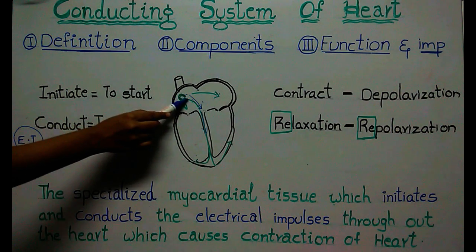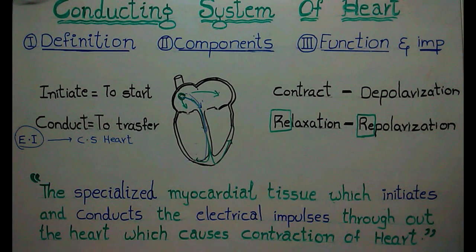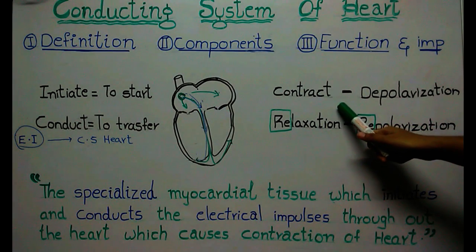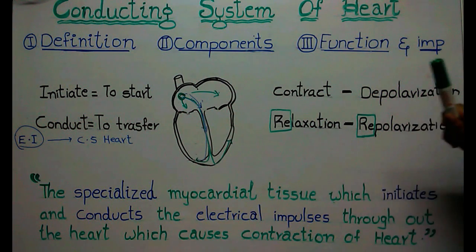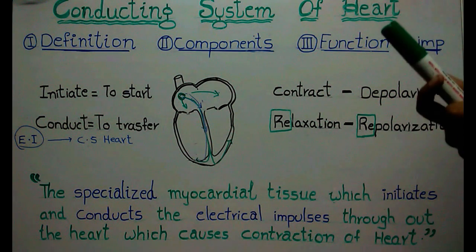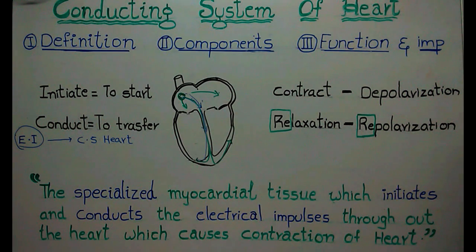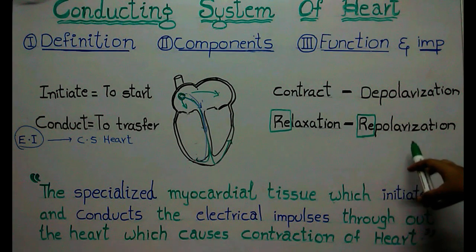These electric impulses are transferred via the conducting system of the heart. An important point: the other word for contraction is depolarization — if anyone says the heart is in a state of contraction, it means it is in a state of depolarization. Similarly, if someone says the heart is in a state of relaxation, it means it is in a state of repolarization. To remember which is which: in 'relaxation' we have 're', and in 'repolarization' we also have 're' — so both are related.